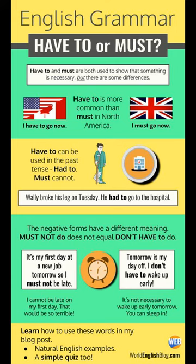Both expressions have to and must show that something is necessary, but there are some differences. Have to can be used in the past tense — had to do something — while must cannot. The negative forms have a different meaning: must not do does not equal don't have to do. Have to is more commonly used in North America than must.